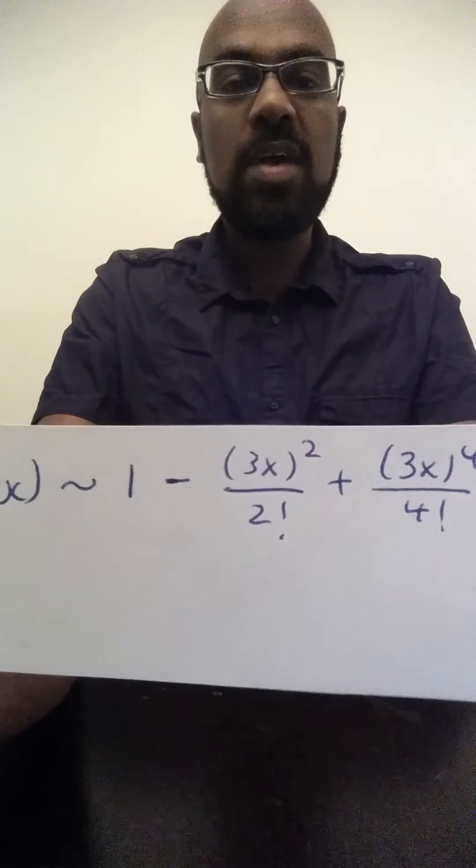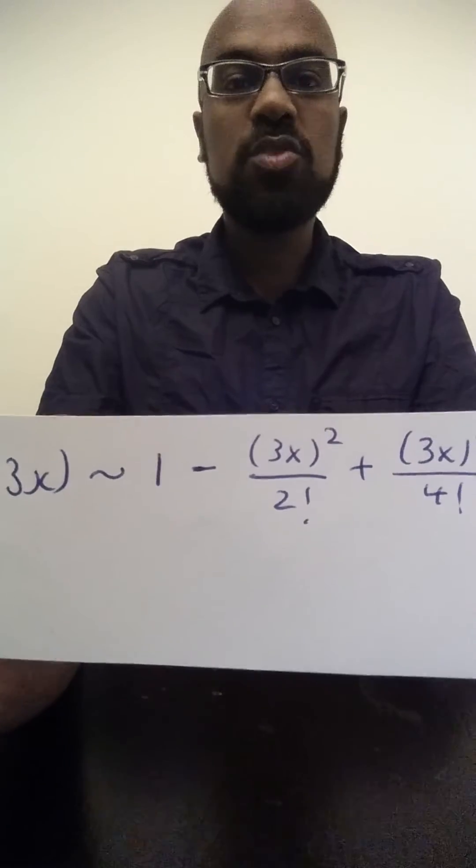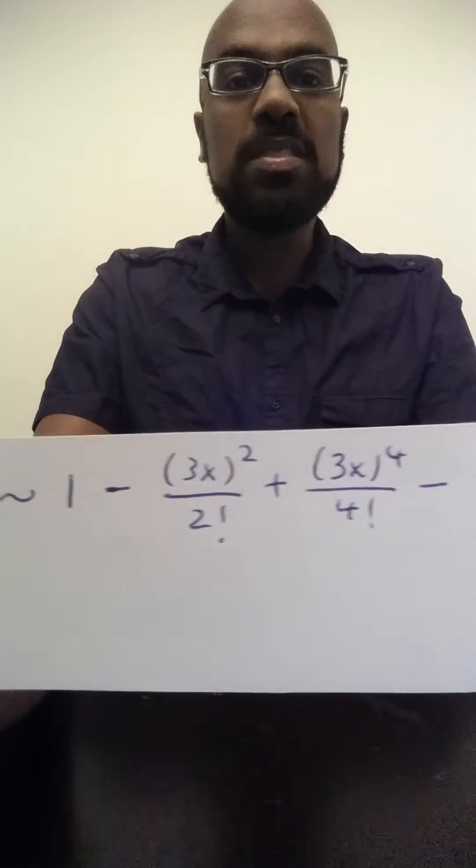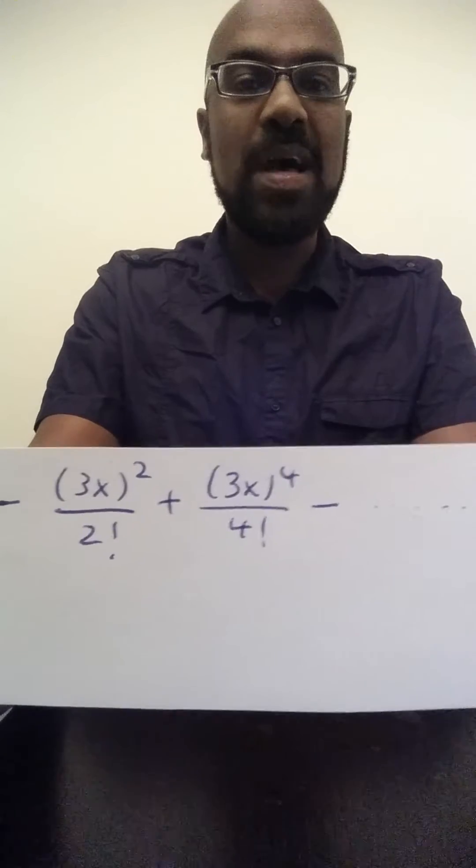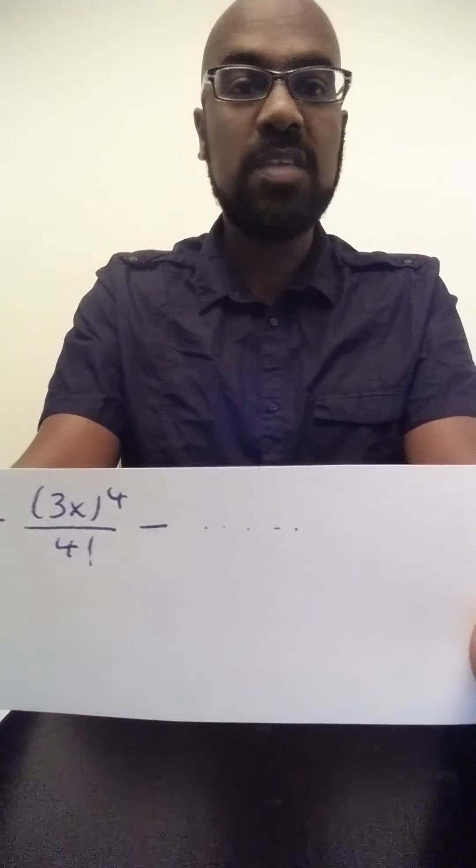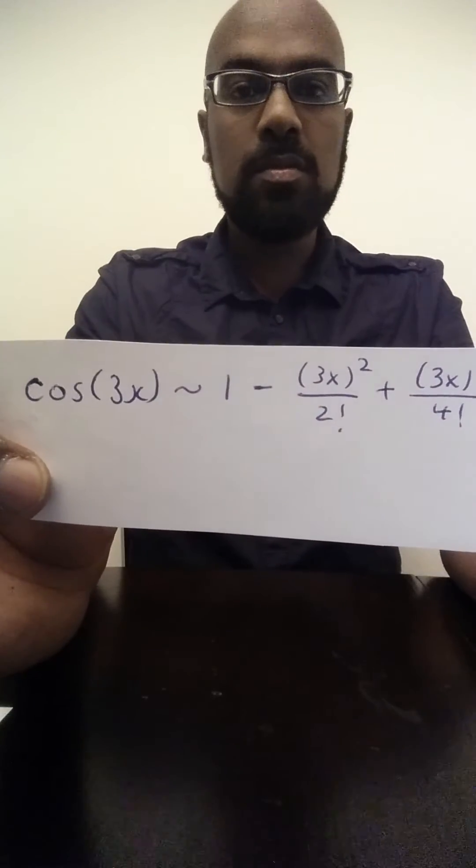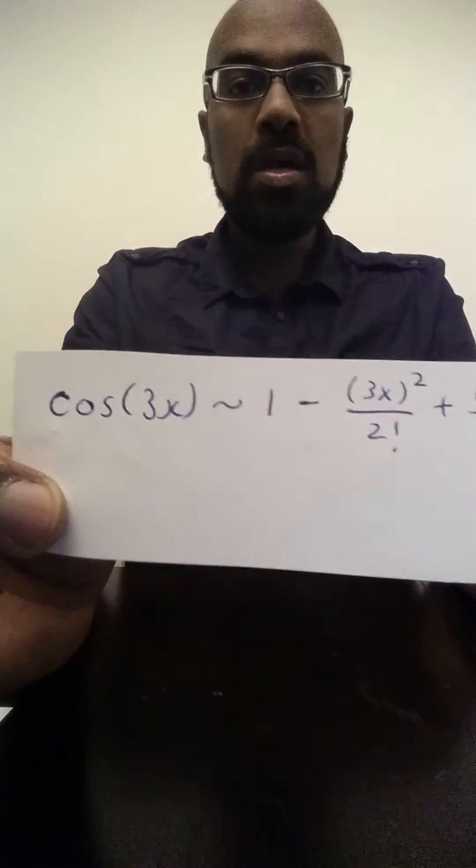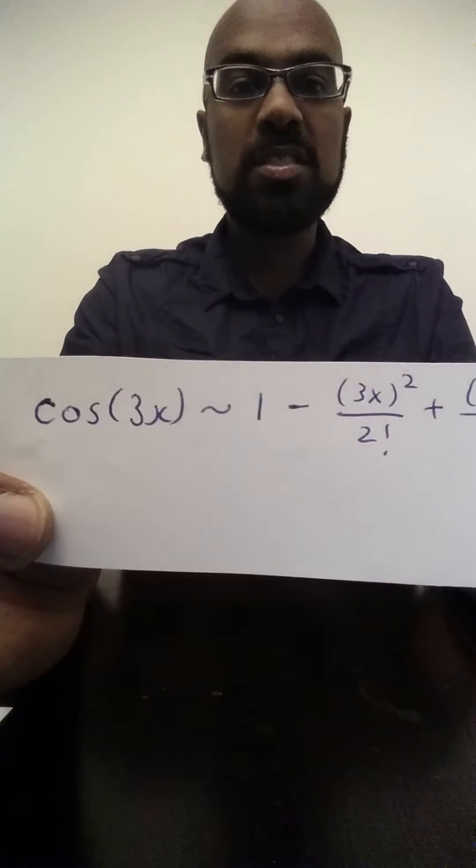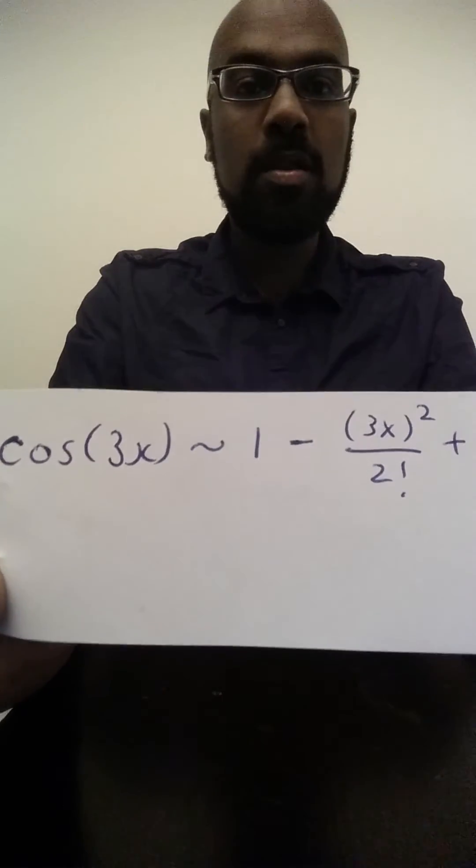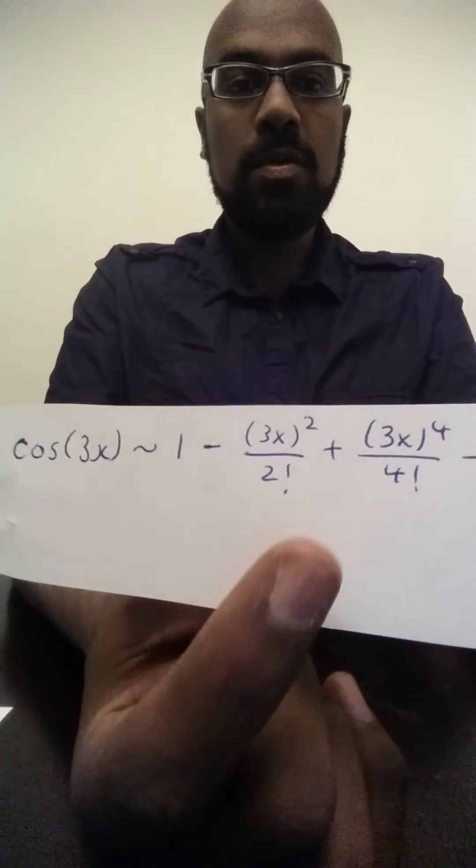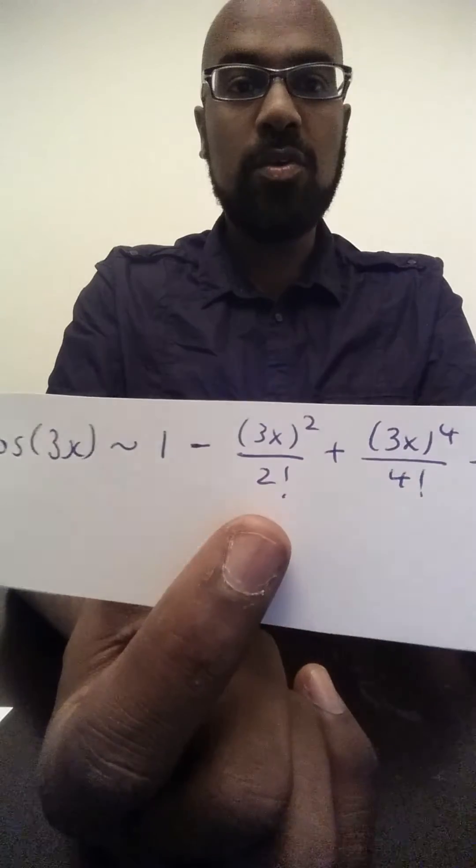For example, if x was one-tenth, then x squared would be a hundredth, whereas x to the fourth would be one ten-thousandth, and all these other terms would be significantly small. And so as x approaches 0, cosine 3x can be approximated pretty well by 1 minus 3x squared over 2 factorial.